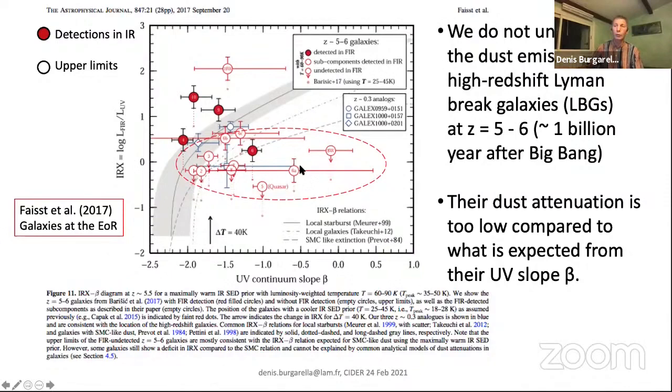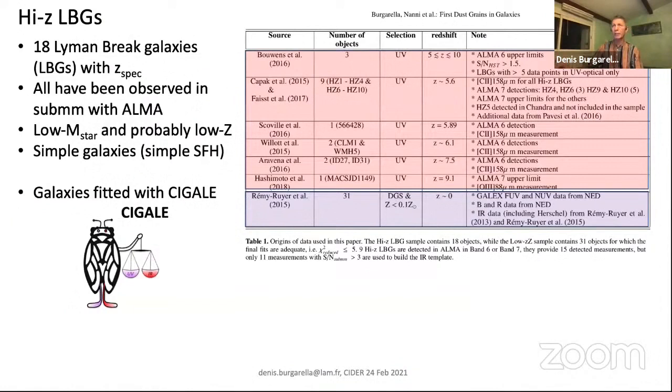We built a sample of 18 Lyman-break galaxies in the range of redshift five to ten approximately. All of them have spectroscopic redshift and have been observed with ALMA. When you fit them, you find that they are low stellar mass and probably low metallicity objects, which is consistent with their redshift. So we assume simple star formation history because these are simple galaxies.